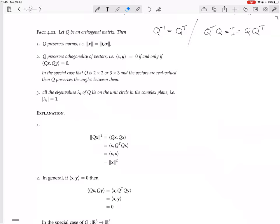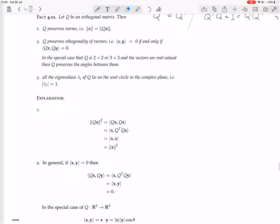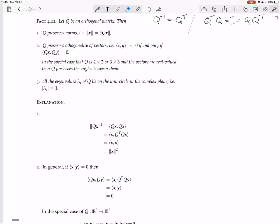And effectively, all of this is kind of saying that Q is a generalization of a rotation matrix. It's like a rotation matrix but with complex numbers and different dimensions, then R2 and R3 where we can look at rotations. So now you have a proof of these properties. Proof of 1.